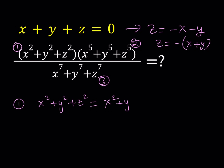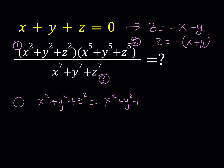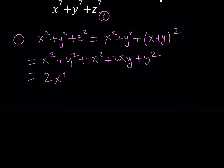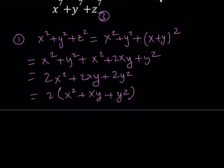I have x squared plus y squared, and z squared will be replaced. When you square that expression, it is the same as x plus y quantity squared. Expanding: x squared plus y squared plus x squared plus 2xy plus y squared. Adding like terms gives 2x squared plus 2xy plus 2y squared, which can be written as 2 times the quantity x squared plus xy plus y squared. That is my first expression.